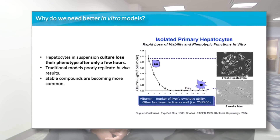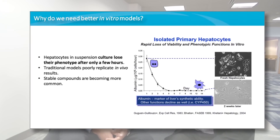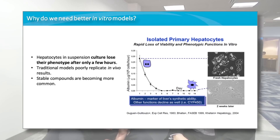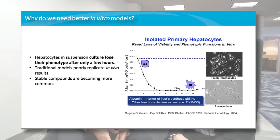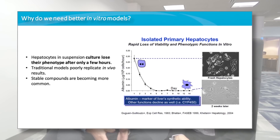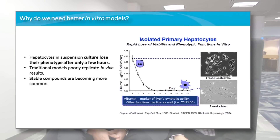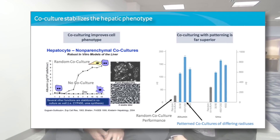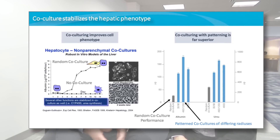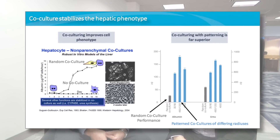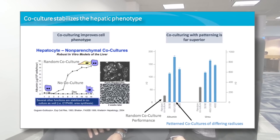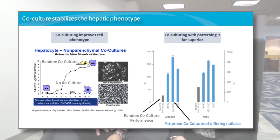Okay, and this is called Hepatopac, is that right? That's right. The product line is called Hepatopac. It's a micro-patterned co-culture of primary hepatocytes from a variety of different species — whether it's human, rat, monkey, or dog — co-cultured with a non-parenchymal cell. It's the combination of the architecture and the co-culture that gives it this longevity and improved functionality.